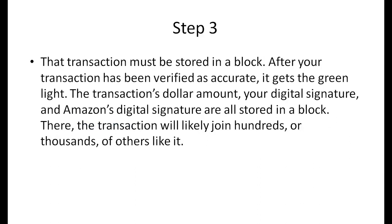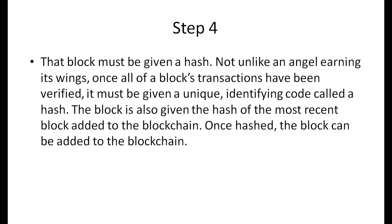Step three: that transaction must be stored in a block. After your transaction has been verified as accurate, it gets the green light. The transaction's dollar amount, your digital signature, and Amazon's digital signature are all stored in a block, where it will likely join hundreds of thousands of others like it. Step four: that block must be given a hash — a unique identifying code. The block is also given the hash of the most recent block added to the blockchain. Once hashed, the block can be added to the blockchain and shared across all the computers.